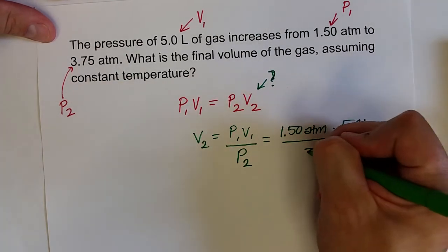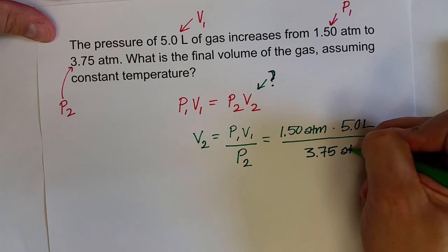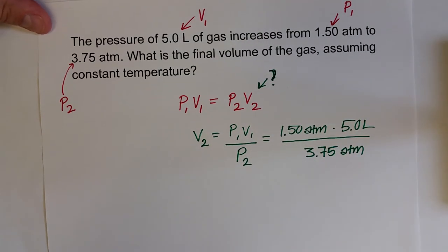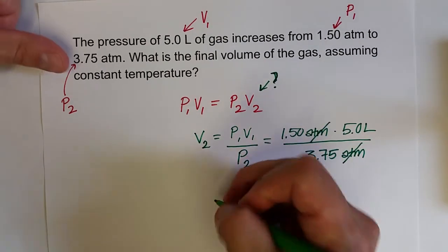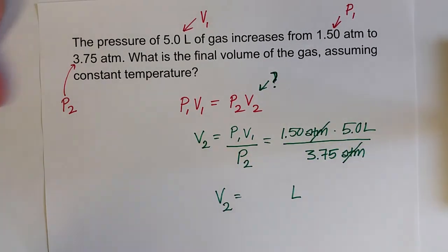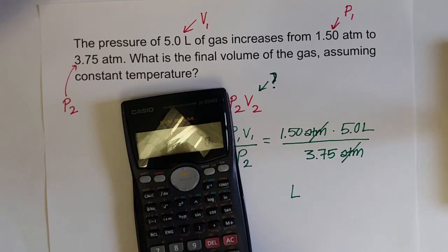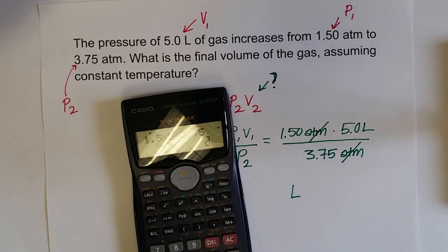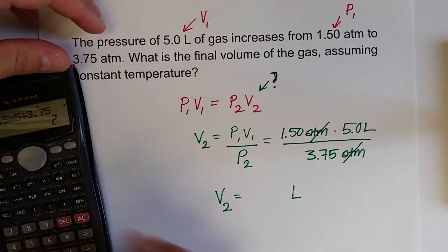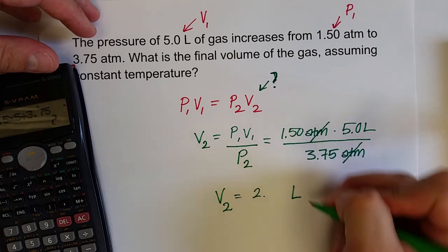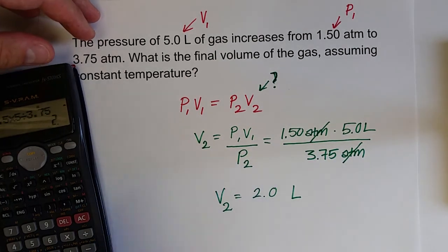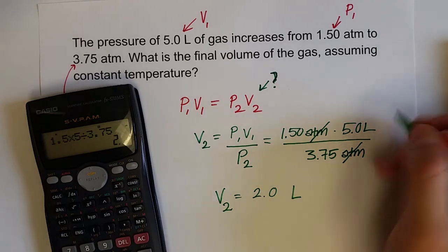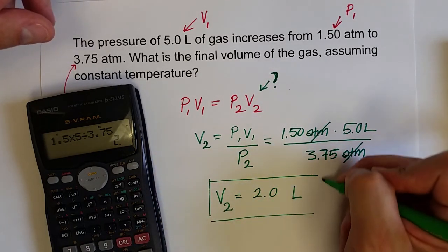P2 is 3.75 atm. If we notice, our atmospheres will cancel out, leaving us with units of liters, which is a good unit for volume. We just calculate this in our calculator. So 1.5 times 5 divided by 3.75 gives us 2. We'll have to take that to 2.0 liters for our final answer with two significant figures. And that's how you perform this calculation.